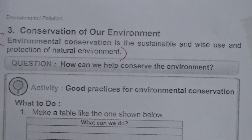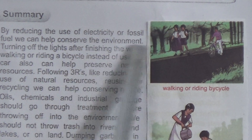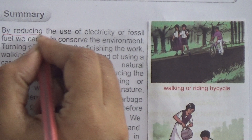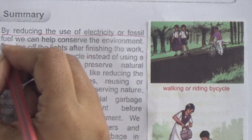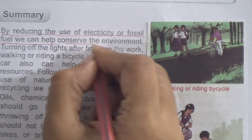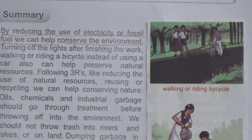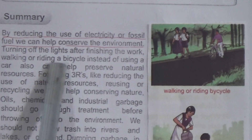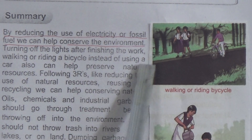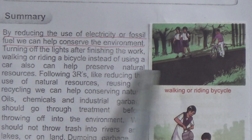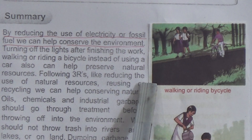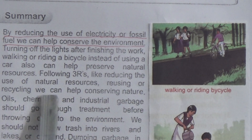How can we help conserve the environment? By reducing the use of electricity or fossil fuels, we can help conserve the environment. Underline this line. Turning off lights after finishing work and walking or riding a bicycle instead of using a car can also help preserve natural resources.